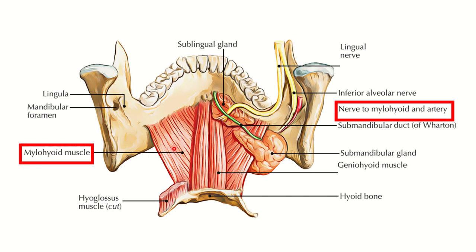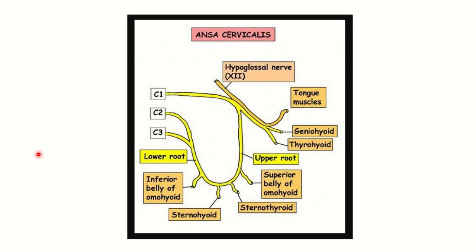The mylohyoid muscle is supplied by the mylohyoid nerve. This mylohyoid muscle is located close to the mandible and is supplied by the mylohyoid nerve, which arises from the inferior alveolar nerve. The inferior alveolar nerve is not part of the ansa cervicalis, and it supplies the mylohyoid muscle.